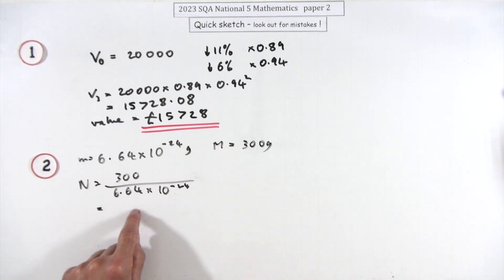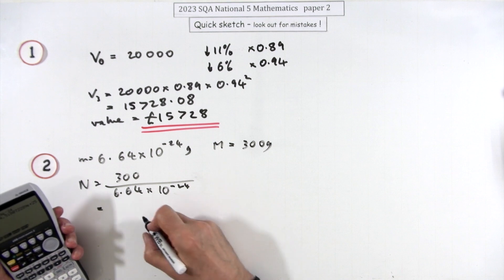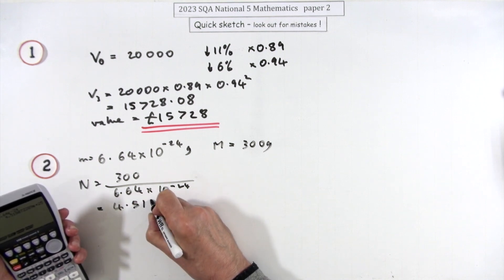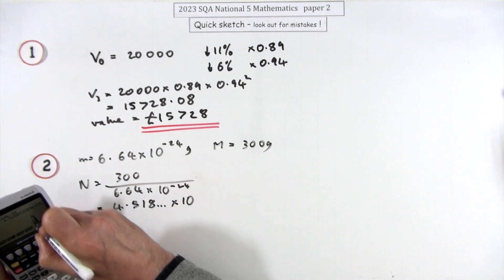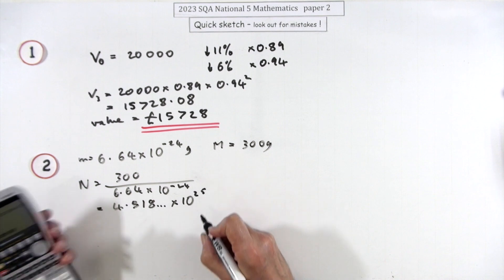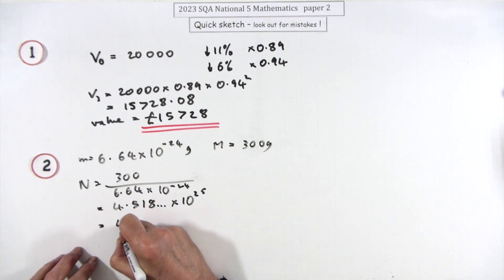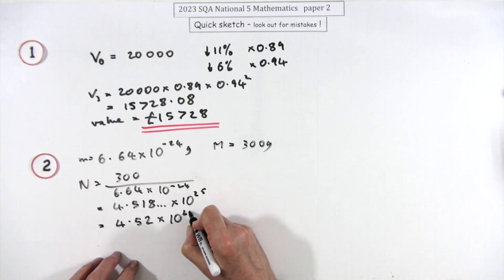Of course there'll be no units because it's just a number. Your calculator will probably give you that answer the way you want it. So just typing that in and using the EXP button gives you the answer in scientific notation: 4.518 and so on, times 10 to the power, and it goes +25, so that's 25. To three significant figures that would be 4.52 × 10²⁵.